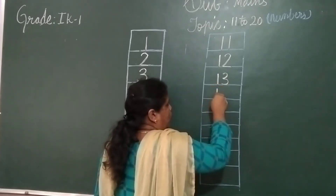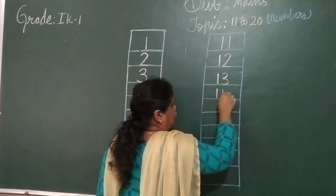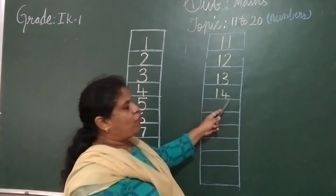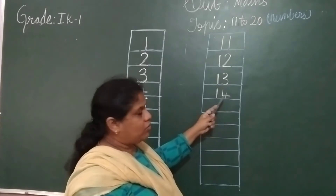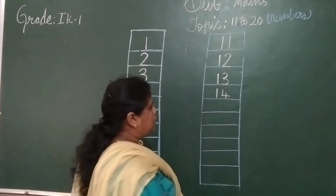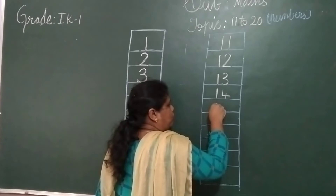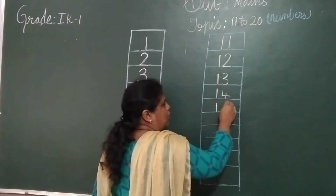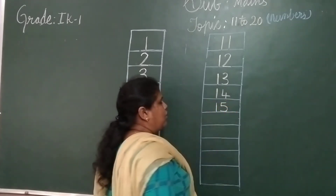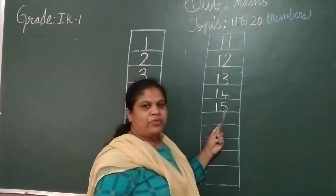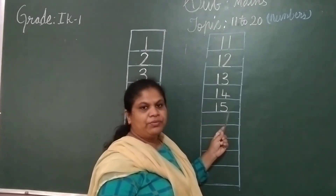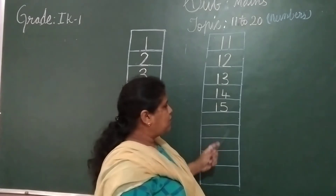Next. One, four — 14. One, four — 14. Next, after 14: one, five — 15. 15. One, five — 15.